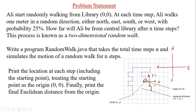Moving south is a negative change on the y-axis, and moving west is a negative change on the x-axis. So: we increment y when the person moves north, decrement y for south, increment x for east, and decrement x for west. The origin is (0, 0). After n steps the person ends at some (x, y). We take the square root of x² + y² to compute the Euclidean distance.